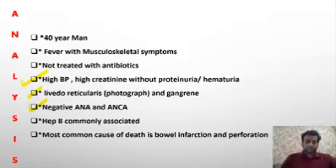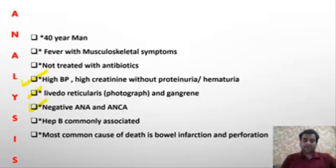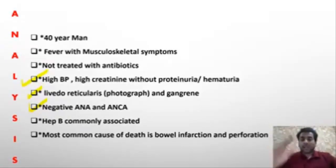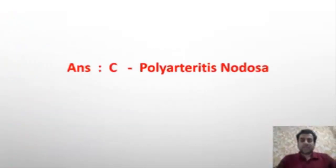The patient succumbed to bowel perforation and infarction. So we have a male patient with fever, inflammatory arthritis, skin lesions, renal arteritis without glomerulonephritis, ANA and ANCA negative, hepatitis B association, and death due to bowel perforation. Most of you are absolutely correct — the answer is polyarteritis nodosa.